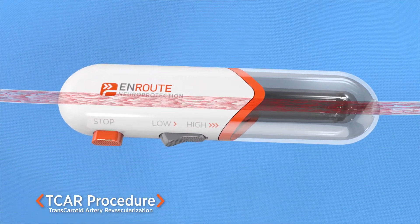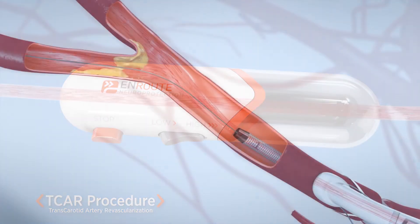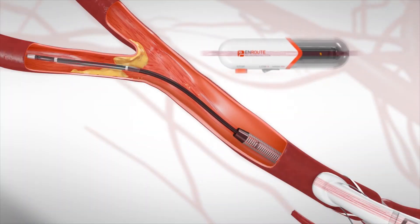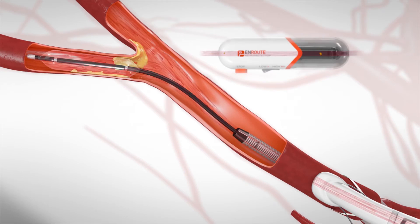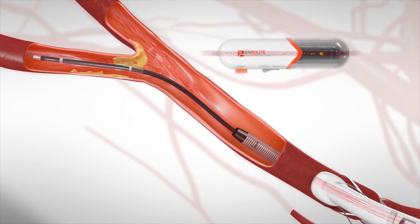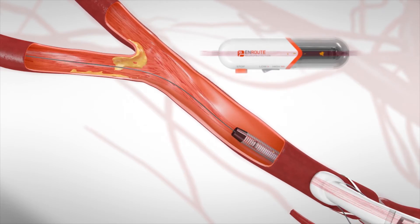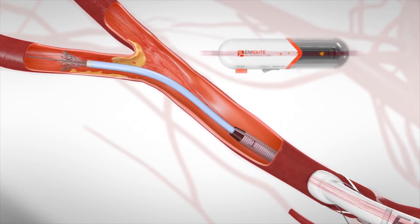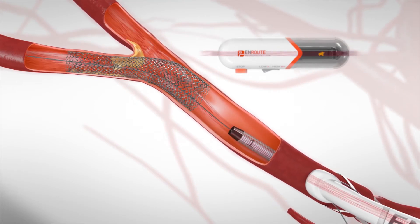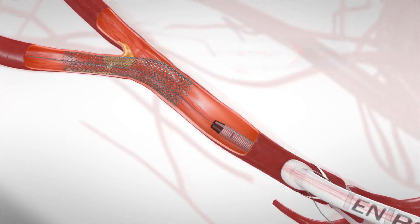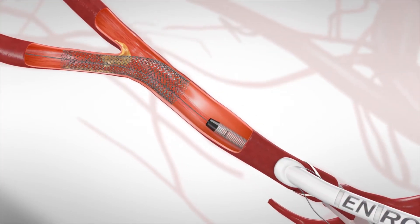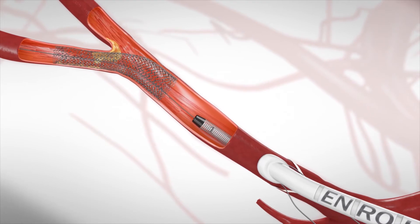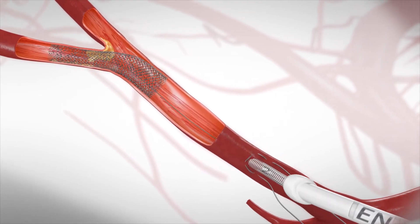The carotid stenosis is pre-dilated with balloon angioplasty. An appropriately sized carotid stent is deployed to keep the artery open. Forward flow is restored, the sheath is removed, and the carotid artery is sutured and repaired prior to skin closure.